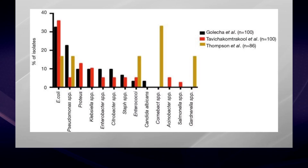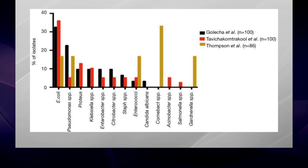Likewise, other bacteria such as Pseudomonas and Gardnerella have also been found in urinary oxalate crystals.